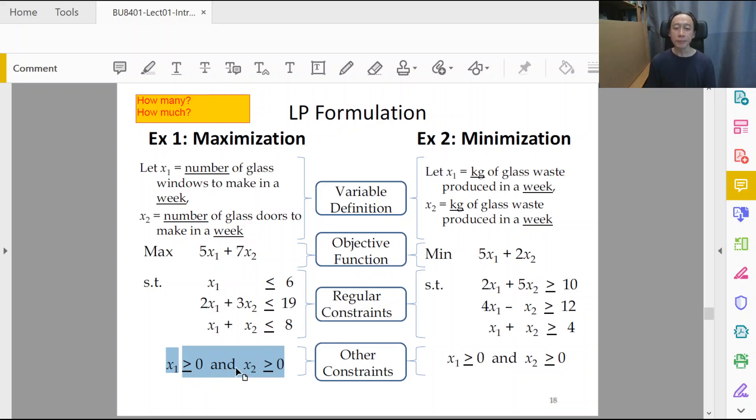So x1, x2 greater than or equal to zero. Why greater than or equal to zero? Why can't they be negative?